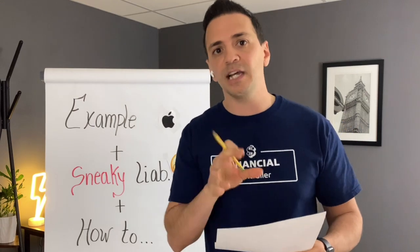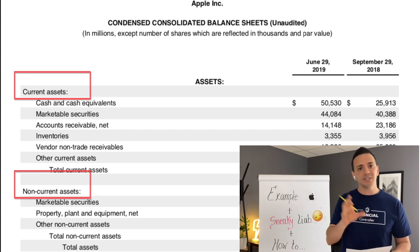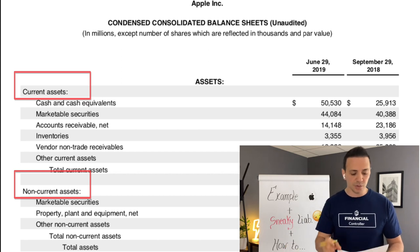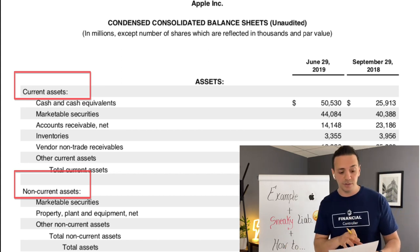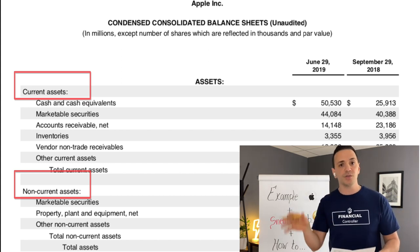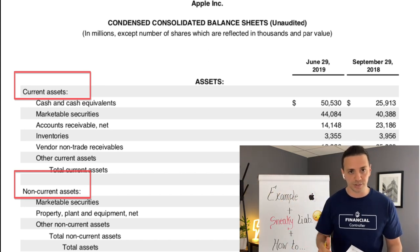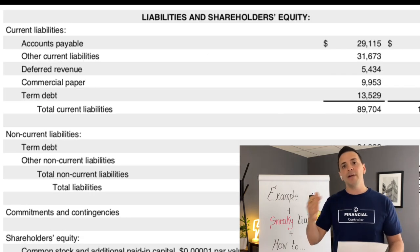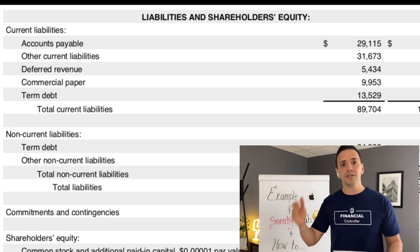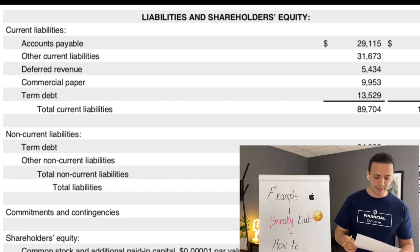You'll also notice that assets and liabilities are broken down between current and non-current. Current means something that's going to materialize within 12 months or less. Non-current is longer than a year. The company breaks it down so management and investors can know which resources can be converted to cash within 12 months versus longer-term resources, and similarly, which liabilities are imminent within 12 months versus longer-term debt or liabilities.